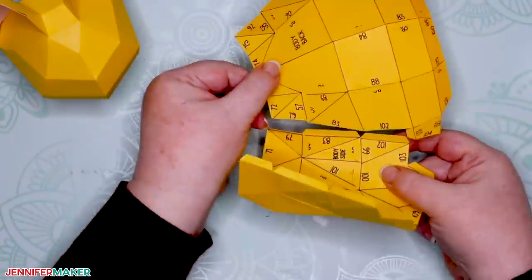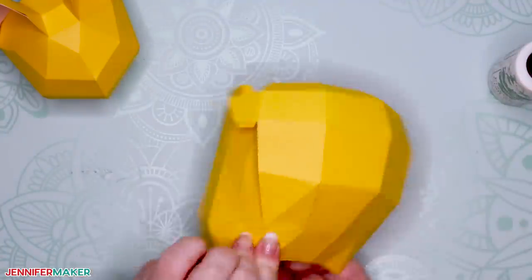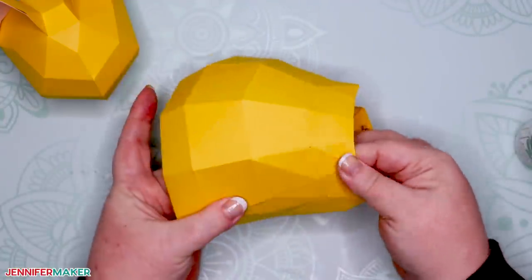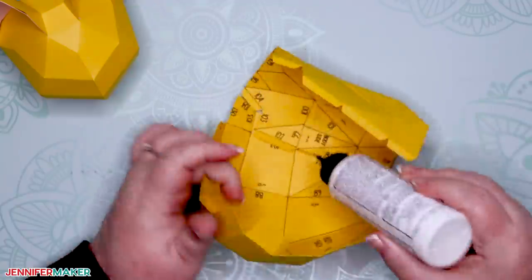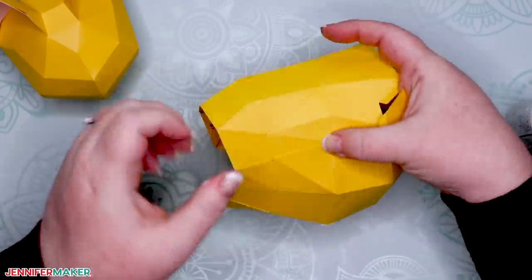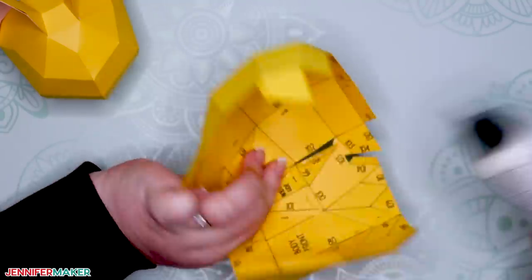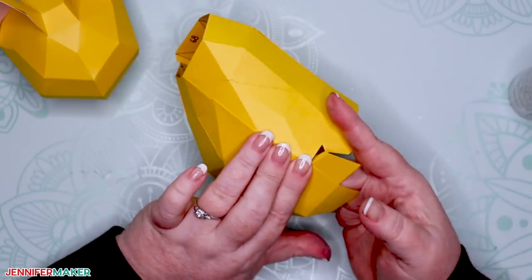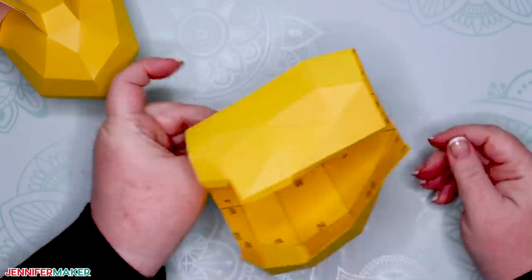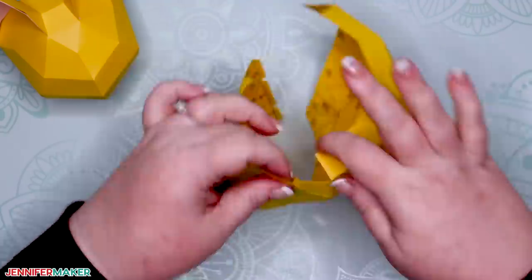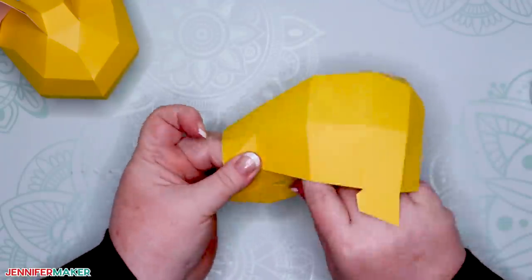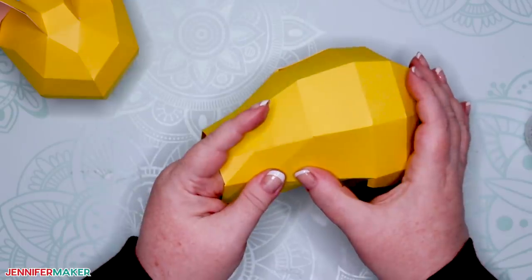All right, now let's attach your body front to your body back. I recommend starting by matching up tab 79. And do it one tab at a time. It might be a little tricky to get your hands in place to press both the tabs down, so go slow. Then be sure to attach the other side to close the body piece.